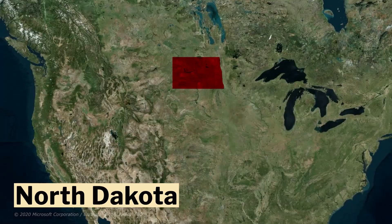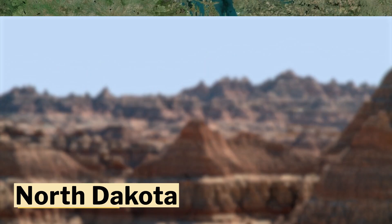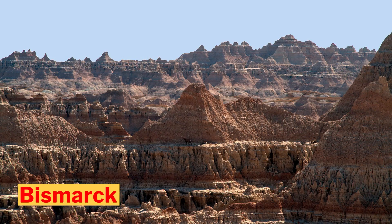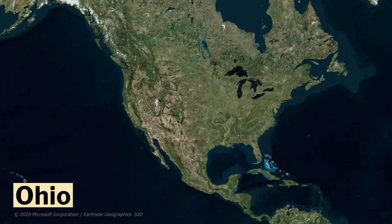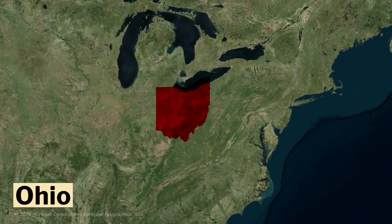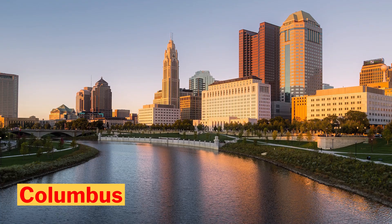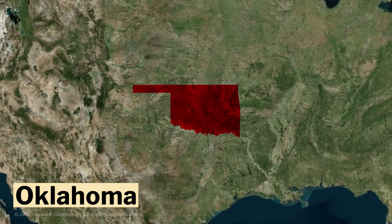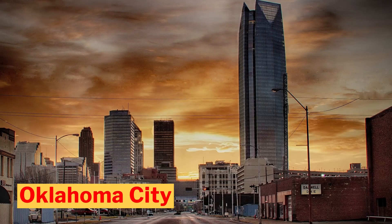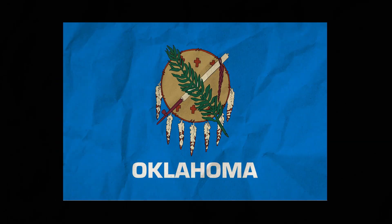Number 34, North Dakota. Its capital is Bismarck. This is the flag of North Dakota. Number 35, Ohio. Its capital is Columbus. This is the flag of Ohio. Number 36, Oklahoma. Its capital is Oklahoma City. This is the flag of Oklahoma.